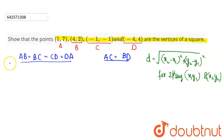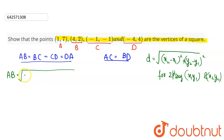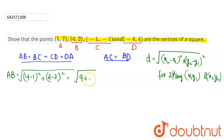The distance between point A and point B is found using the distance formula — this is side AB. So AB = √[(4 − 1)² + (2 − 7)²] = √[3² + (−5)²] = √[9 + 25] = √34.